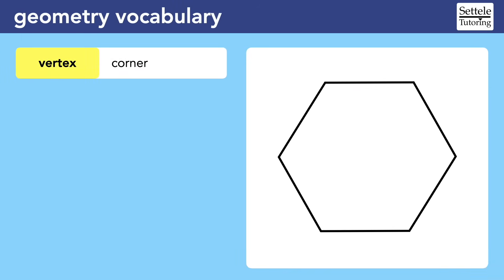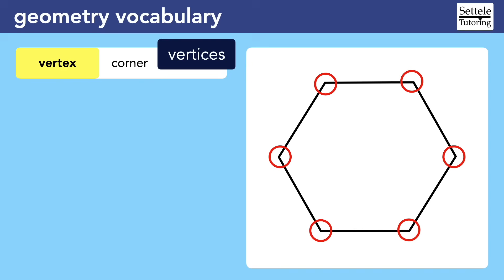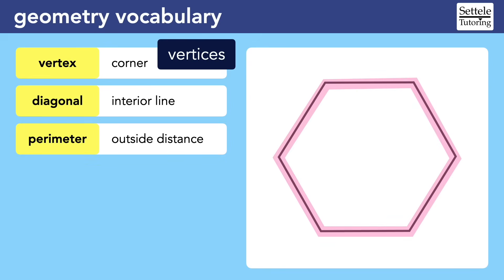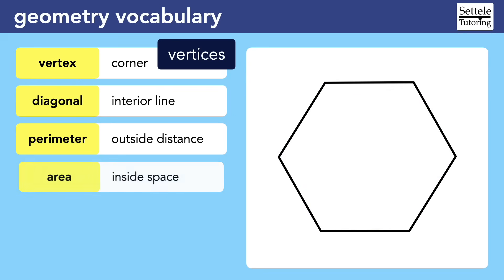Let's look at some other words to know for polygons. A vertex is a corner on any kind of shape; the plural of vertex is vertices. A diagonal is an interior line that connects two vertices, and it does not need to go directly across a shape. The perimeter is the outside distance covered by all of the sides, and the area is the inside space taken up by the shape. A perimeter could be measured in feet, but an area would be measured in square feet — two completely different units.